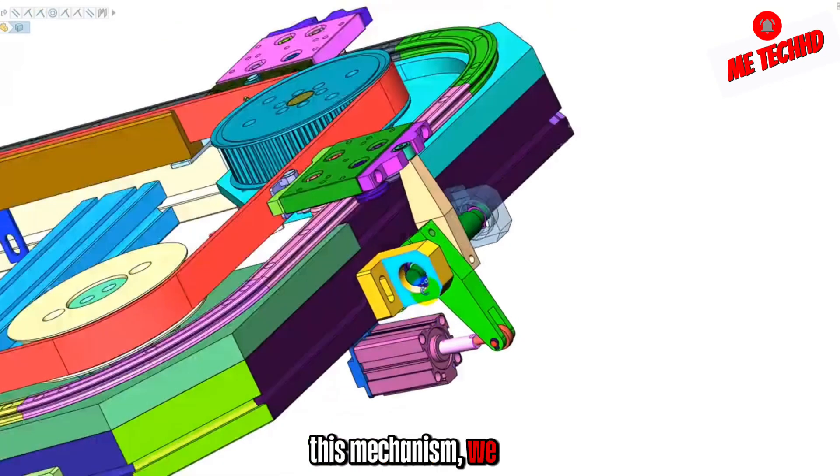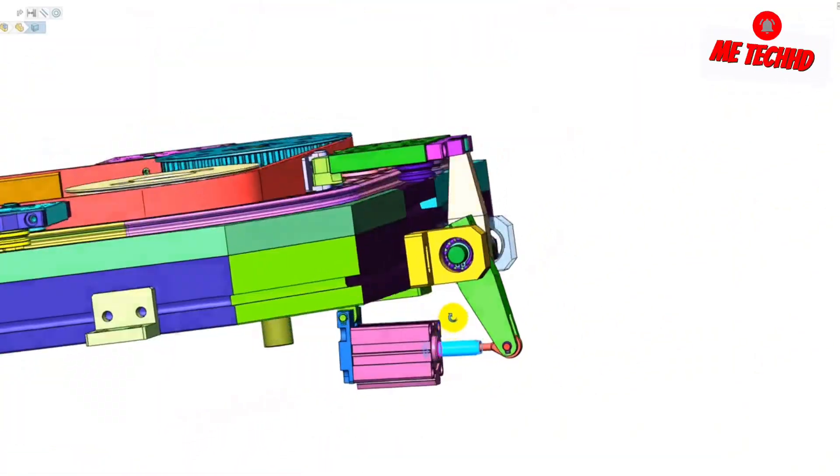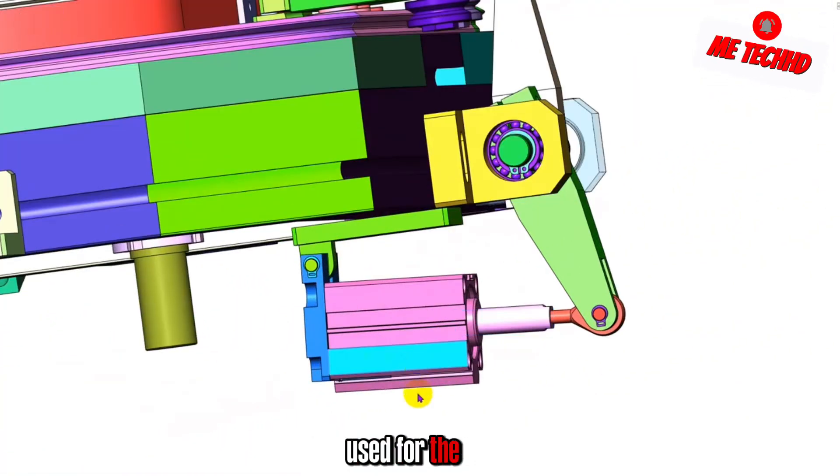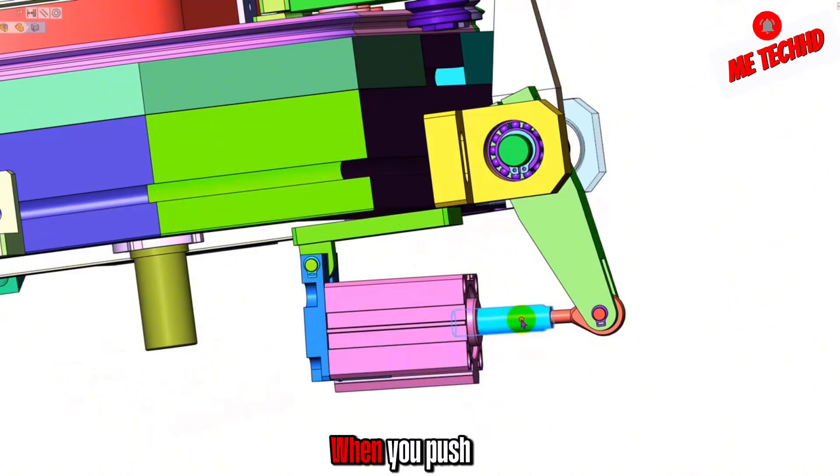And in this mechanism, we use cylinders when designing. The thin cylinder used for the cylinder is convenient for installation. When you push it, you can see it push forward. We are using a fisheye street for this location.